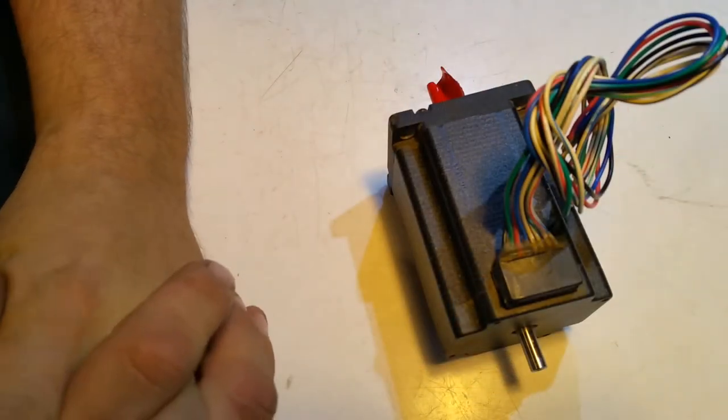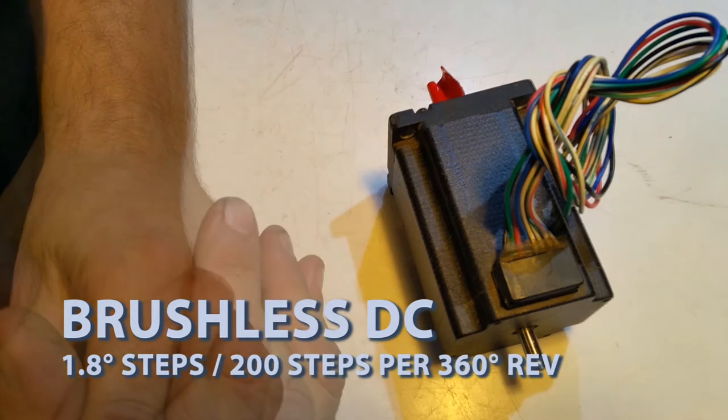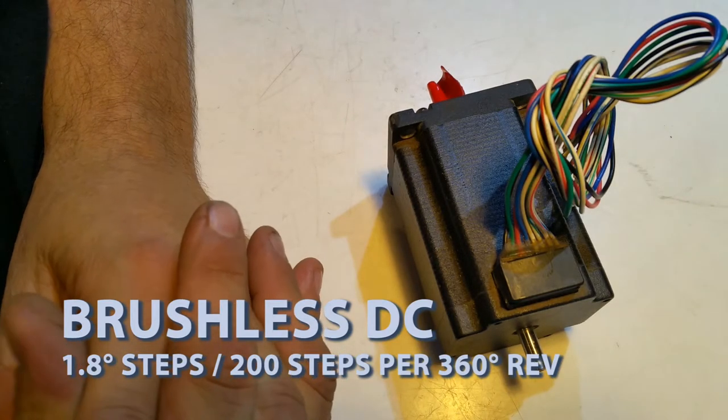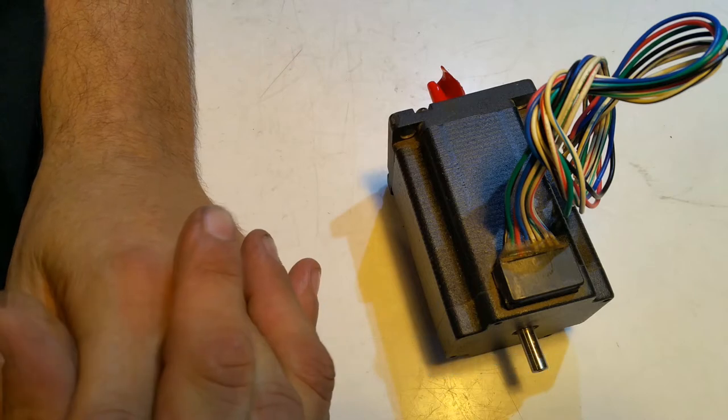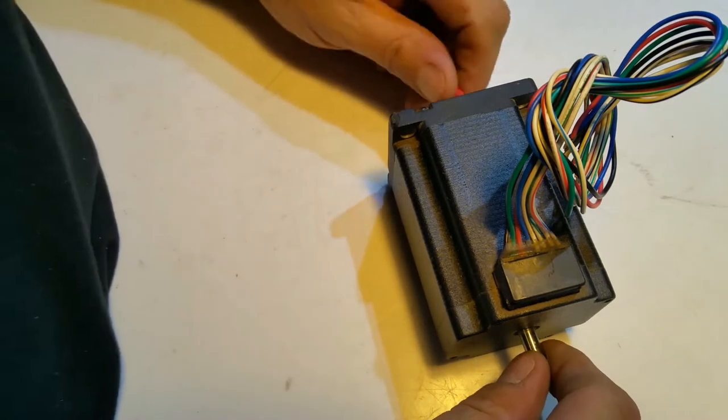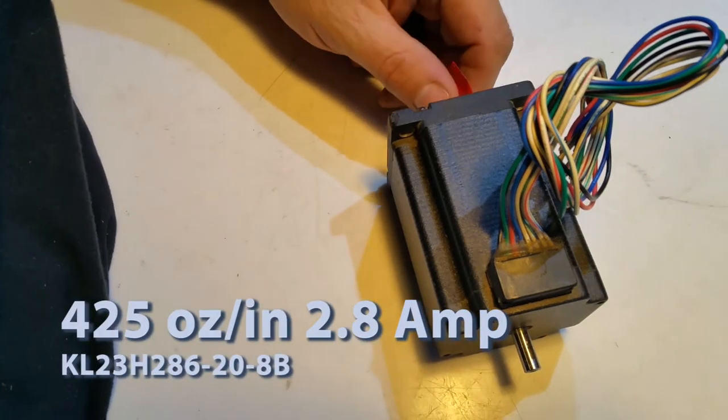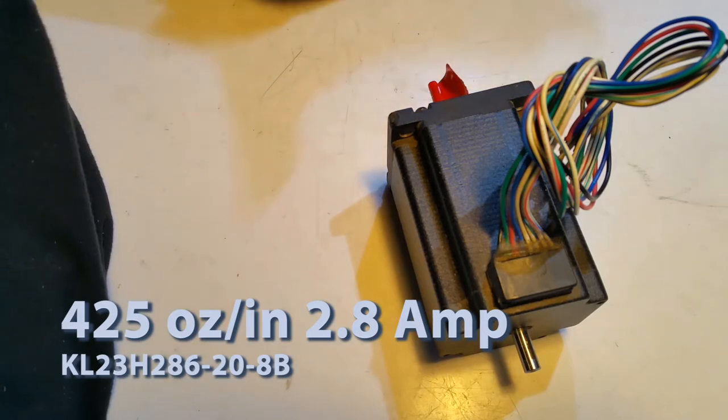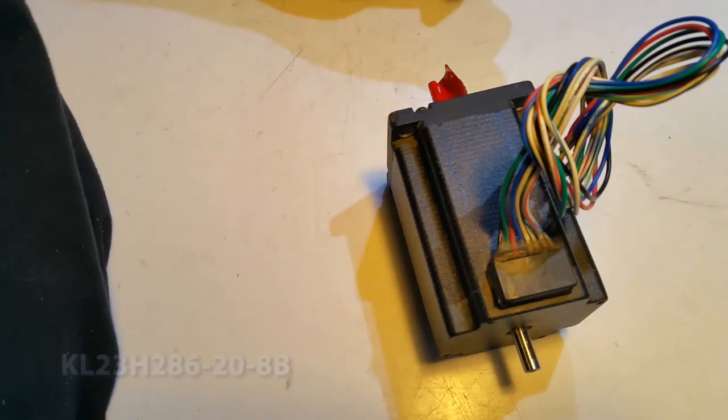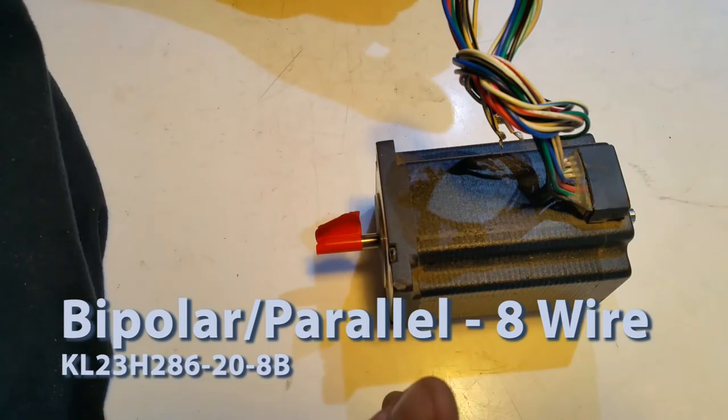A stepper motor or step motor is a brushless DC electric motor that divides the full rotation. There's 200 steps in a 360 degree circle, so each step is 1.8 degrees, and it's a very torquey motor. This motor is 425 ounce-inch, and somebody might be able to explain to me what that means, but they make these a lot smaller. It's 2.3 amps current per phase, bipolar parallel.